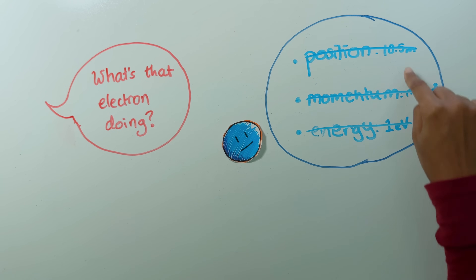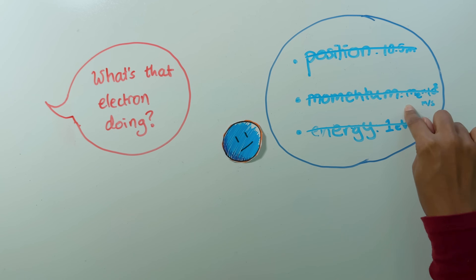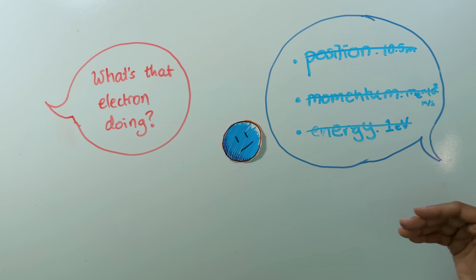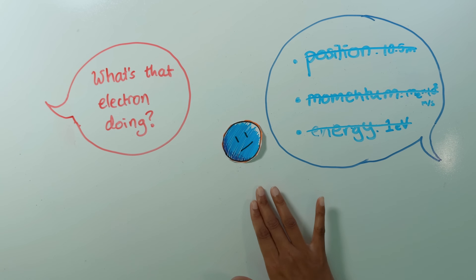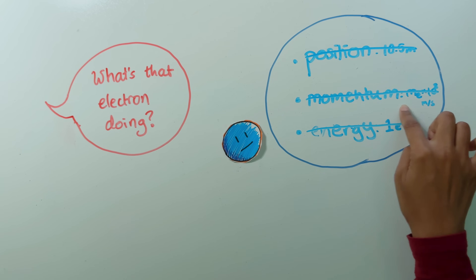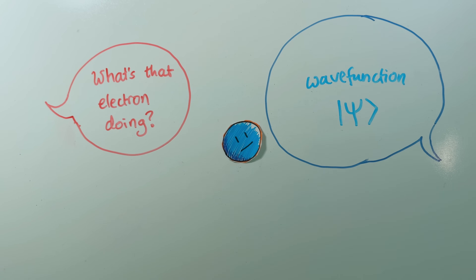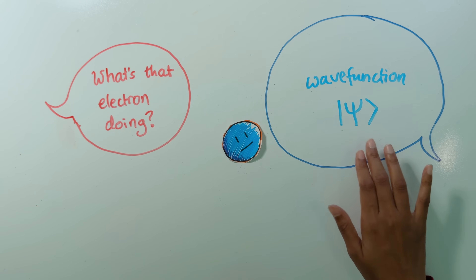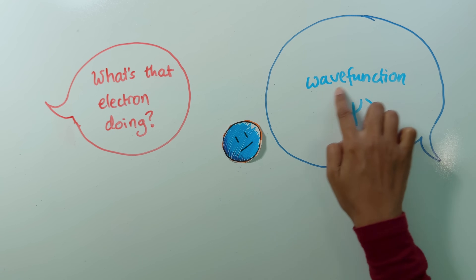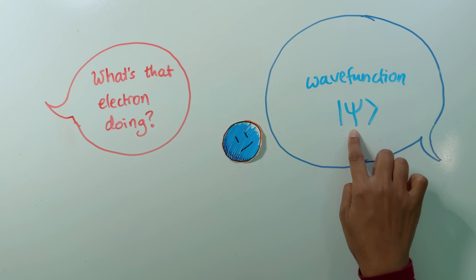A particle usually doesn't have just one position or one momentum or one energy. Instead, it's in a quantum superposition of different options. But that's not the only thing wrong with giving just a list of numbers to describe the state of this electron. In quantum mechanics, the information about the position is not independent of the momentum and energy. Instead, all of the information about the state is packaged together in something called the wave function, and it's represented by this thing here called psi.